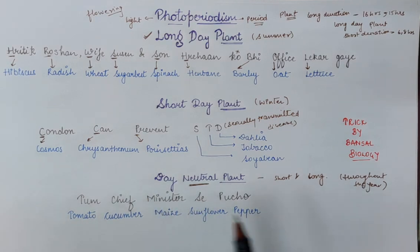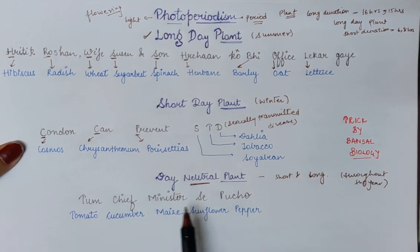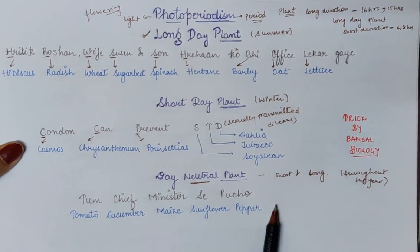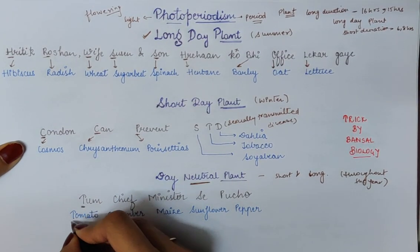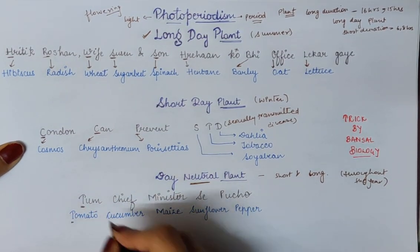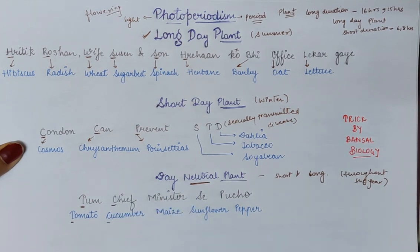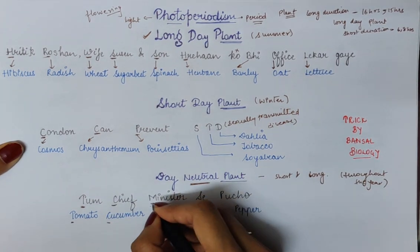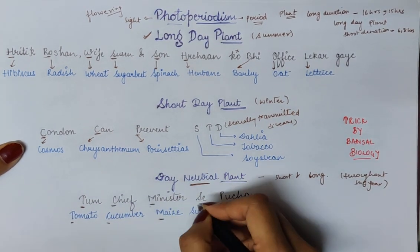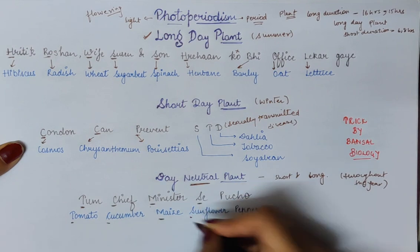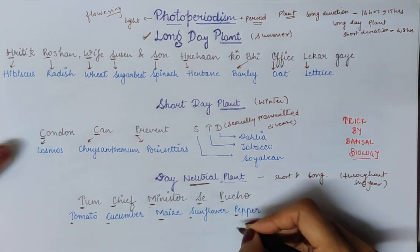Then for day neutral plants, the mnemonic is: 'tum chief minister se poochho' — meaning 'you ask the chief minister.' From 'tum', T gives us tomato. From 'chief', C gives us cucumber. From 'minister', M gives us maize. From 'se', S gives us sunflower. And from 'poochho', P gives us pepper.